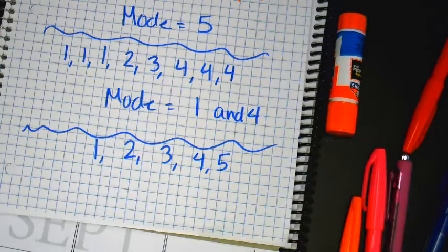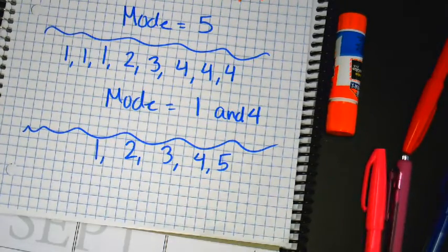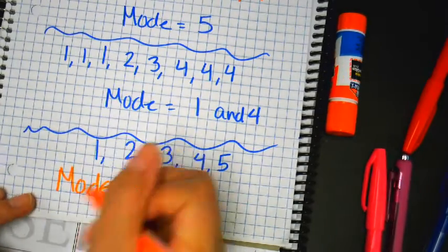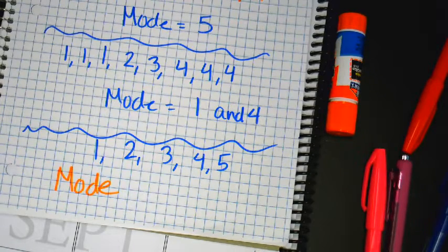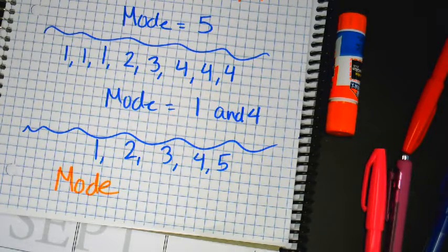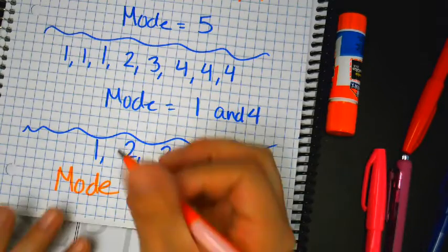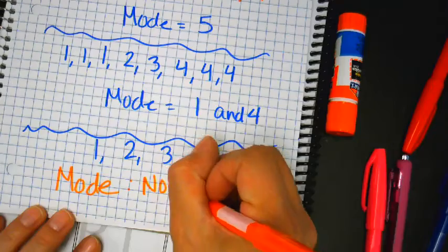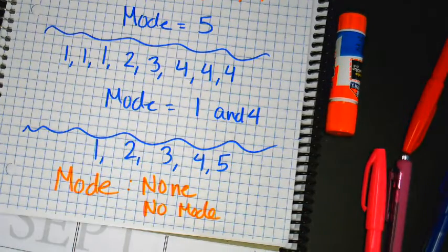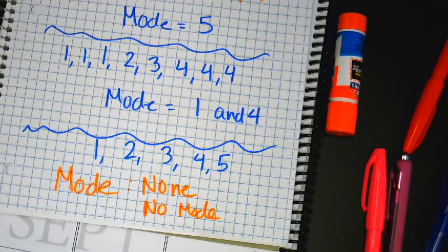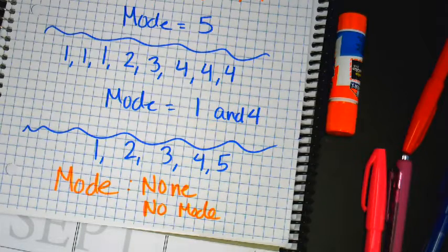Someone asked, what if they all repeat the same time? Well, none of them really repeat, they only appear one time, right? If you write 0, isn't 0 a number? If you write 0, that means 0 repeated. I don't see 0 repeating, do I? Not really. So the mode on this one would be none or no mode, but if you type in 0, it is technically wrong. Here was an example where there is none or no mode. Make sense?